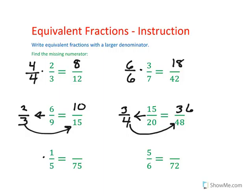5 goes into 75 fifteen times, and 15 times 1 is 15. And 6 goes into 72 twelve times, so 5 times 12 is 60.